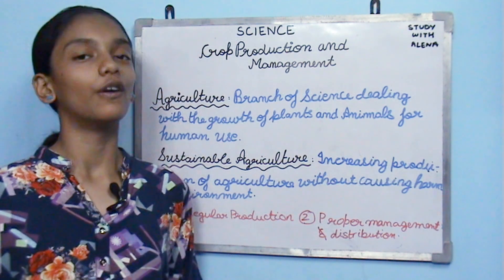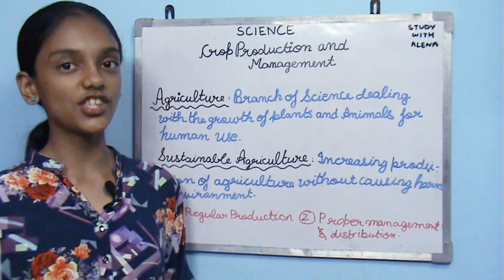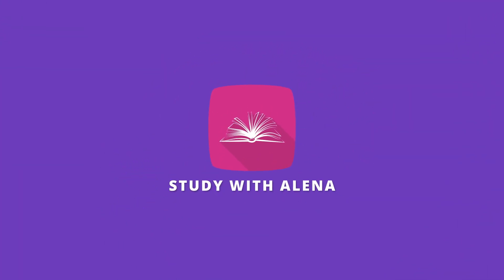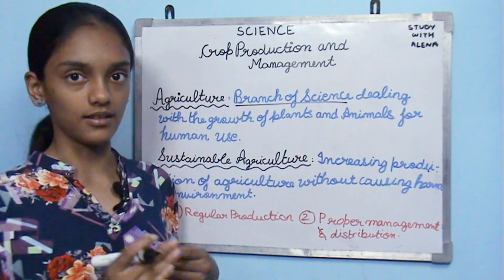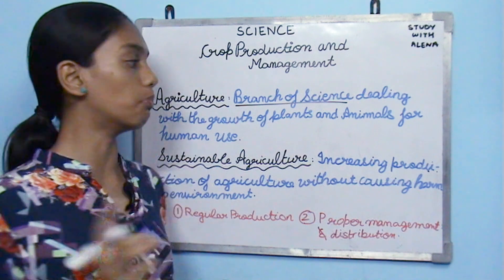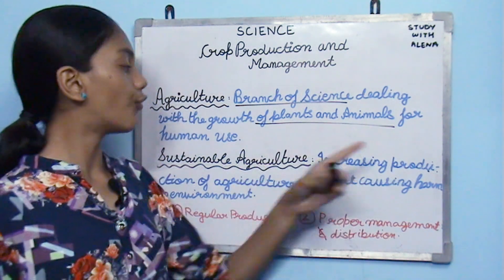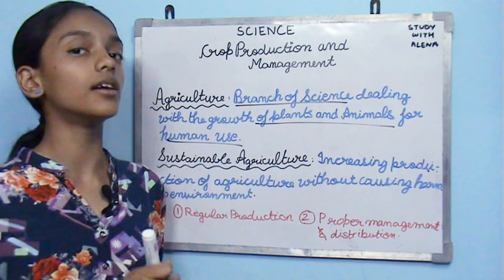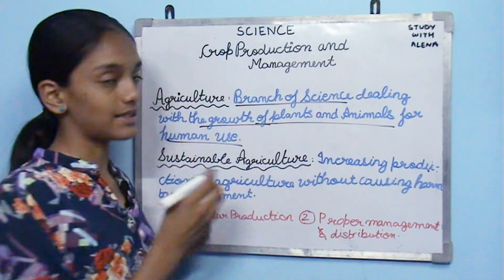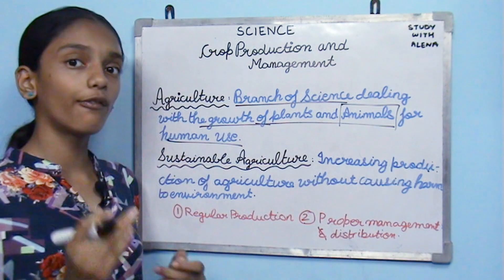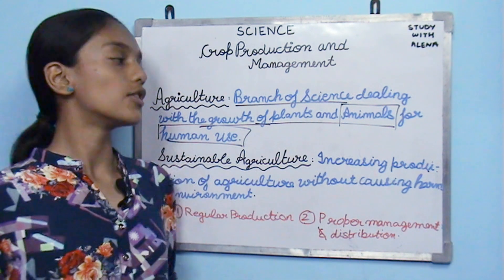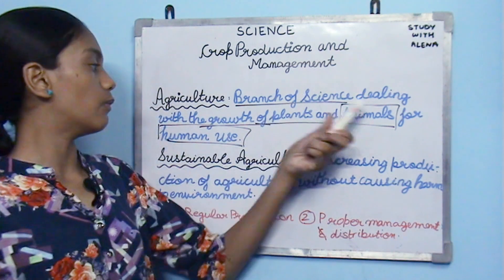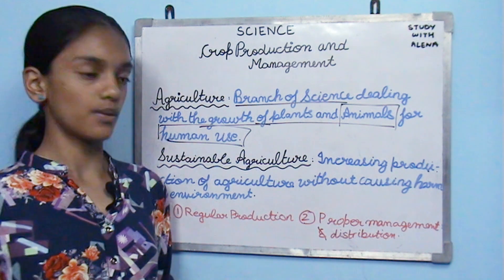Hey guys, I'm Elena and today we are going to learn Class 8 NCERT Science Chapter 1: Crop Production and Management. First, let's know what agriculture is. Agriculture is a branch of science which deals with the growth of plants and animals both — not only plants but also animals — for human use.